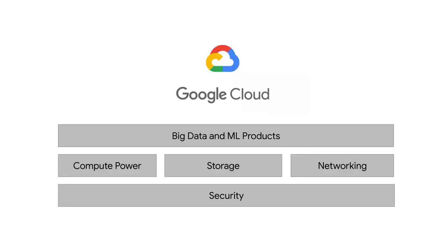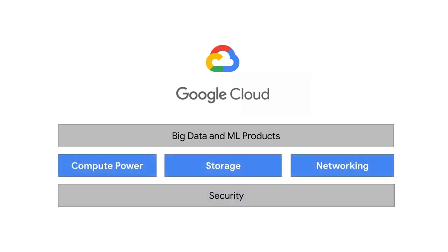There are four fundamental aspects of Google's core infrastructure and the top layer of products and services that you will interact with most often. The base layer that covers all of Google's applications, and therefore Google Cloud's too, is security. On top of that are compute, storage, and networking. These allow you to process, store, and deliver business-changing insights, data pipelines, and machine learning models.